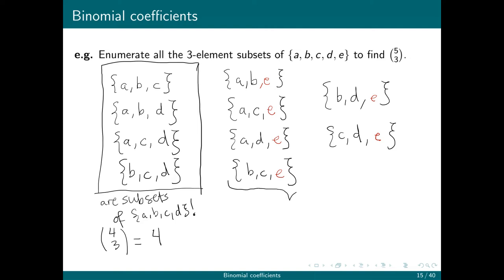Meanwhile, all of the subsets that contain the e are subsets of {a, b, c, d} with e added. So these are all two element subsets that I added e to. There's going to be four choose two of these and there's six of these.